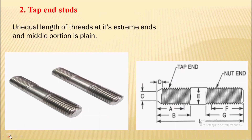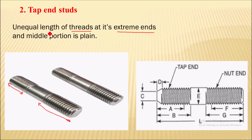The second type is the tap end stud. In a tap end stud there is an unequal length of thread at its extreme ends — the threads at each extreme end are of unequal length. The middle portion of the stud remains plain. One end of this tap end stud goes into the tap hole and the other end receives the nut.